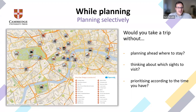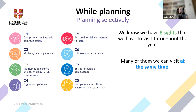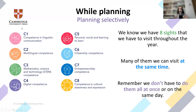We have eight key competency sites, and we need to visit them throughout the year at different points. In some cases it's possible to visit some of them at the same time, and it makes sense because they are inseparable. We really need to remember that we don't have to do them all at once or on the same day — we don't need to worry about covering all of them every single day.